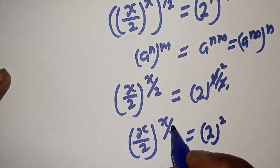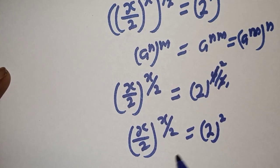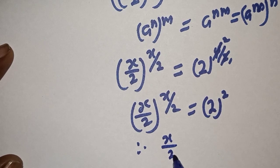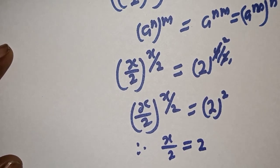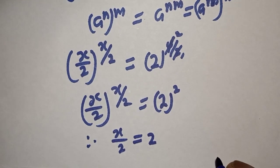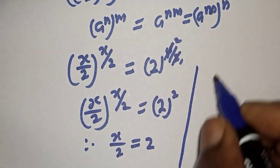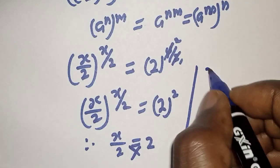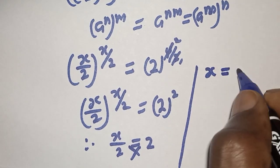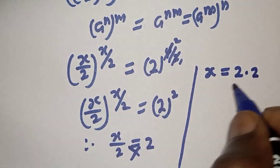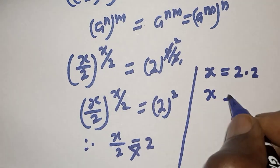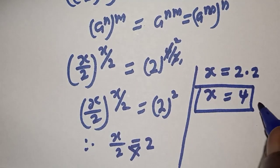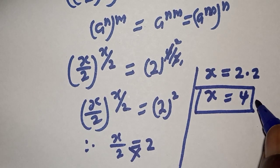And by comparing, the exponents are equal to 2 and the base is equal to 2. Therefore, s over 2 is equal to 2. Let's cross multiply — we have s is equal to 2 multiplied by 2. So, s is equal to 4, and this is the value of s, which is our final answer.